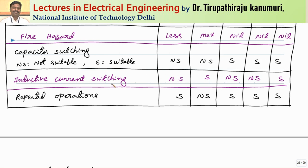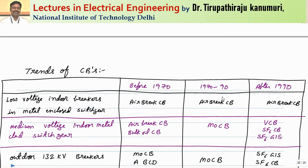For inductive current switching, only minimum oil circuit breakers or SF6 circuit breakers are suitable. For repeated operations, oil circuit breakers are not suitable, but the remaining types can be used for repeated applications.